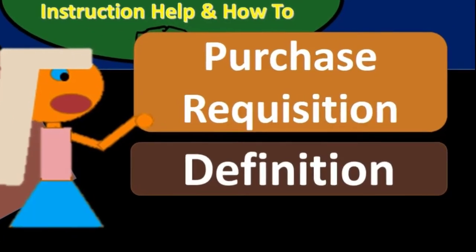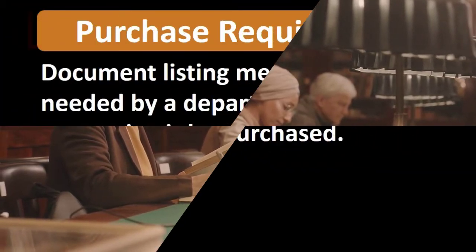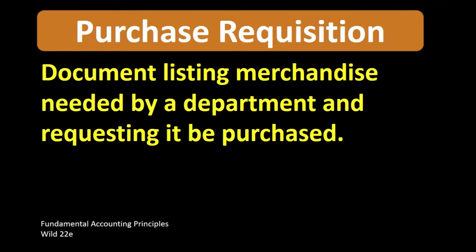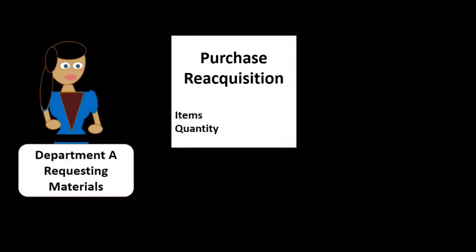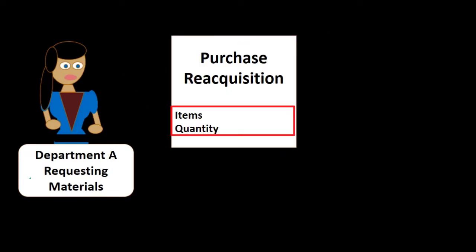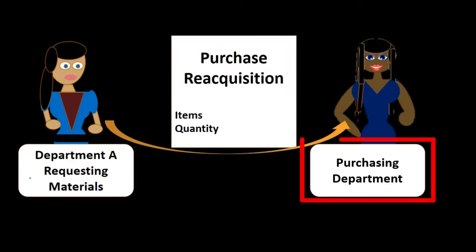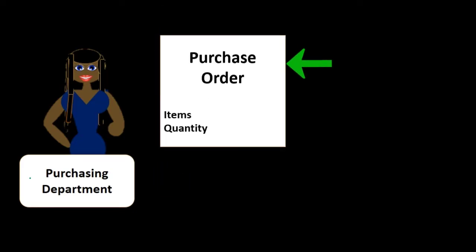In this lecture we will define purchase requisition according to Fundamental Accounting Principles, 22nd edition. The definition of purchase requisition is a document listing merchandise needed by a department and requesting it be purchased. In our purchasing process, when one department sees that they need materials, they create a purchase requisition listing the items and quantity, which then goes to the purchasing department. The purchasing department then takes that purchase requisition and makes a purchase order from it.